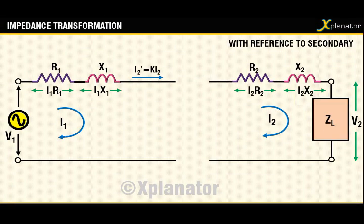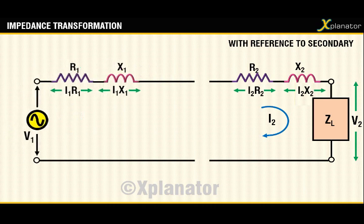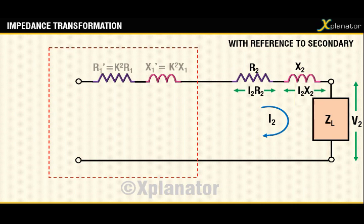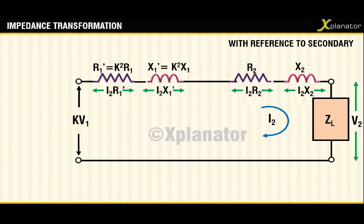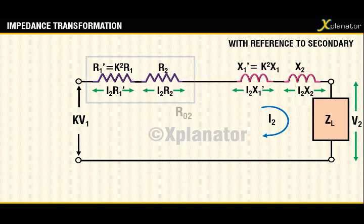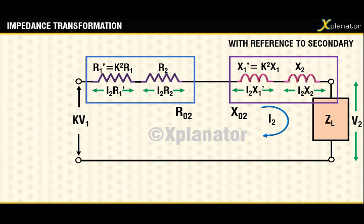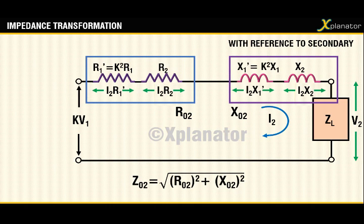For impedance transfer with reference to secondary, you get r1 dash and x1 dash as the new terms. In addition there is transfer of the power supply as well, and that value will be given as k times v1. When the resistances and reactances are combined, you get effective resistance with reference to secondary as r02 and effective reactance as x02. The equivalent impedance with respect to secondary is z02, given by the square root of r02² plus x02².